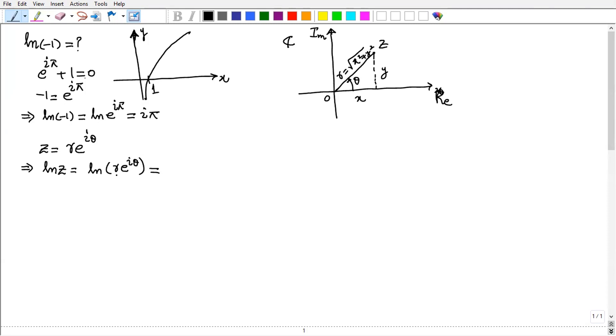Then we apply logarithmic identity here. So this gives you log r plus log e to the i theta. Since we know that log a b equals log a plus log b. This is log r plus log and e cancelled. So this is i theta.